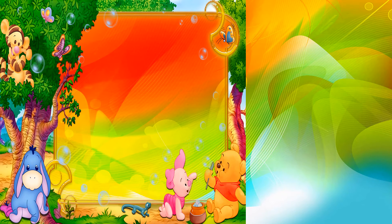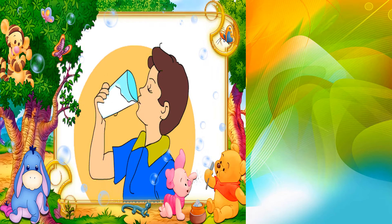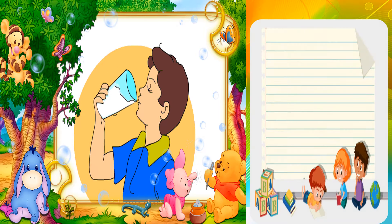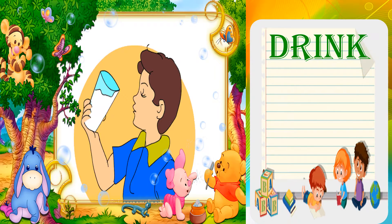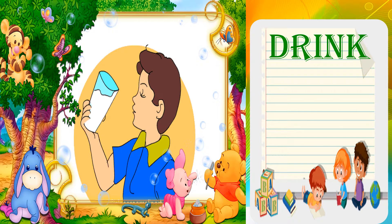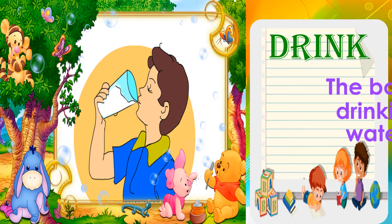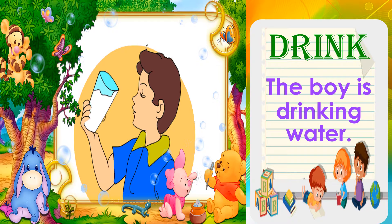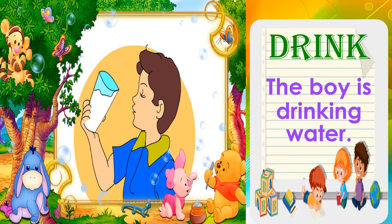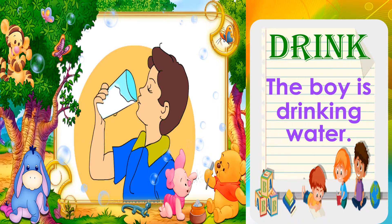We're going to follow the actions that we are doing. The first one — we have a boy. Look at the boy. What is the boy doing? The action word is drink. We're going to use the word drink in a sentence. The boy is drinking water.